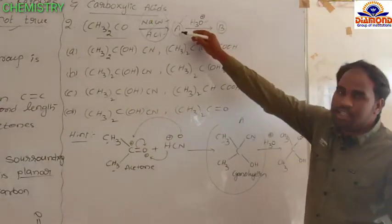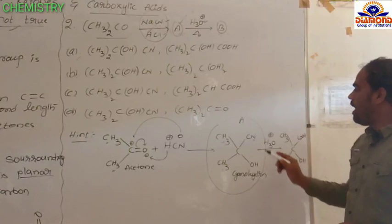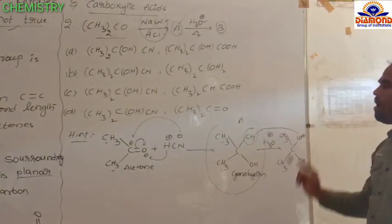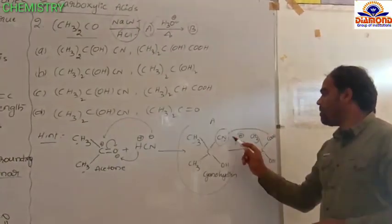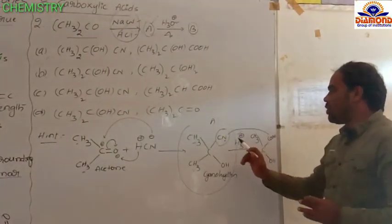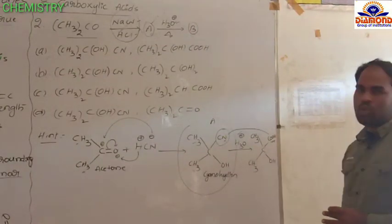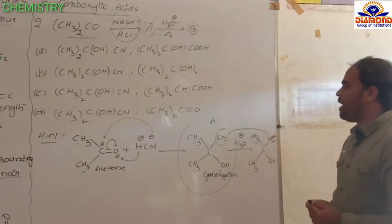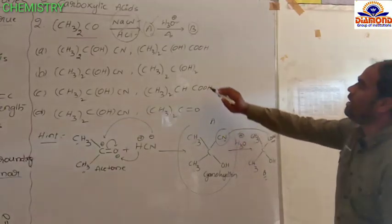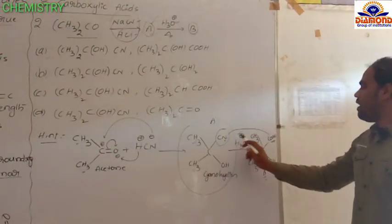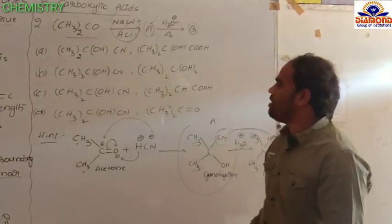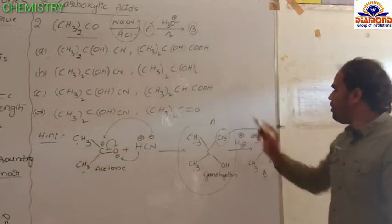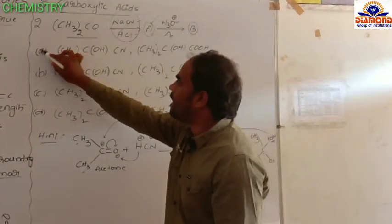Now this cyanohydrin — A — undergoes hydrolysis. When the cyanide group undergoes hydrolysis, that cyanide group is converted to a carboxylic acid group. So always: if cyanide undergoes hydrolysis, it is converted to carboxylic acid. Therefore, CH₃, CH₃, OH, and finally COOH — that is product B. A is cyanohydrin and B is the compound where cyanide is converted to carboxylic acid. So the first option — with the cyanohydrin A and two methyl groups with C(OH)(COOH) — is the correct option for the second question.